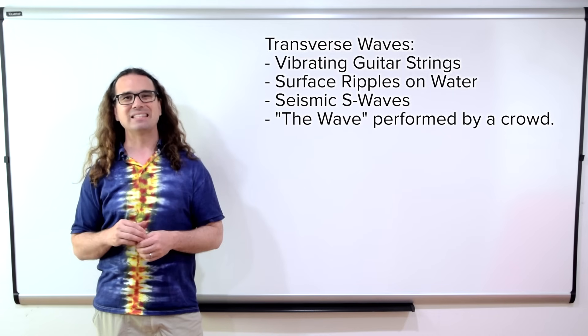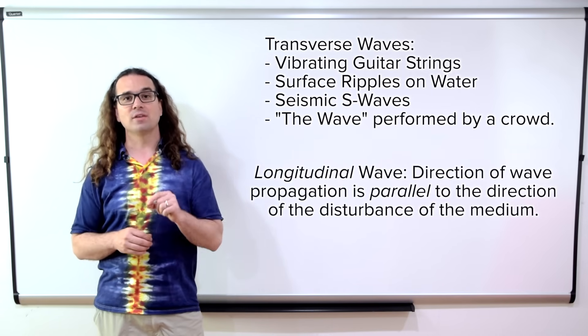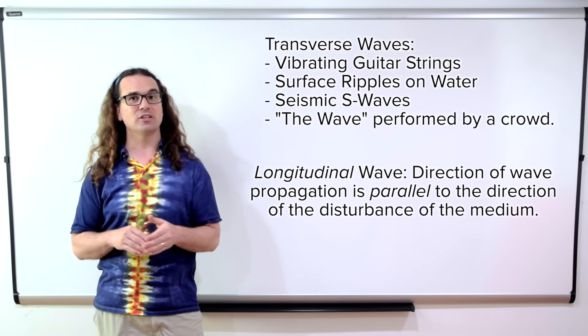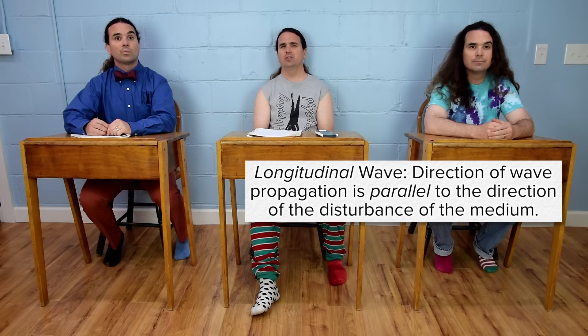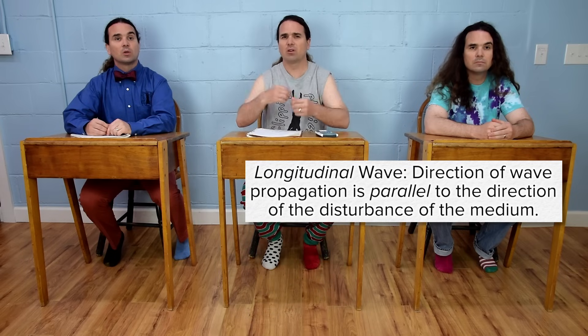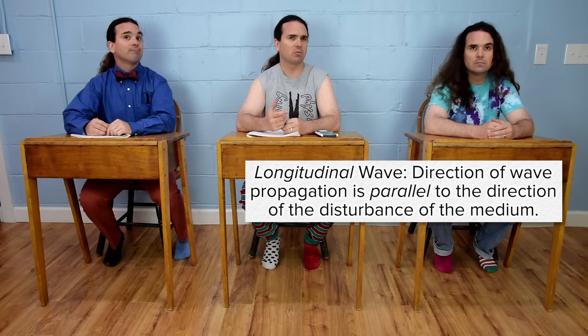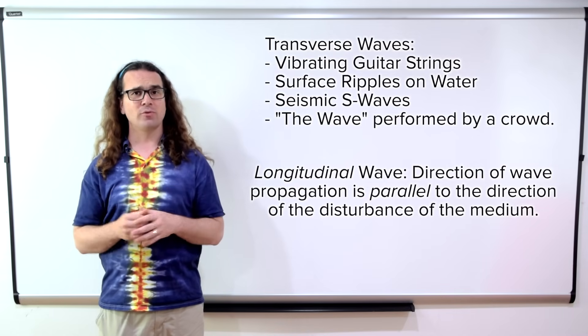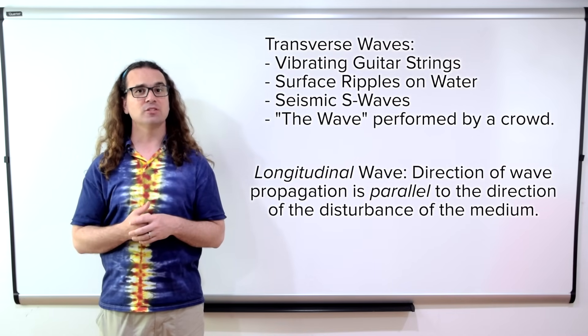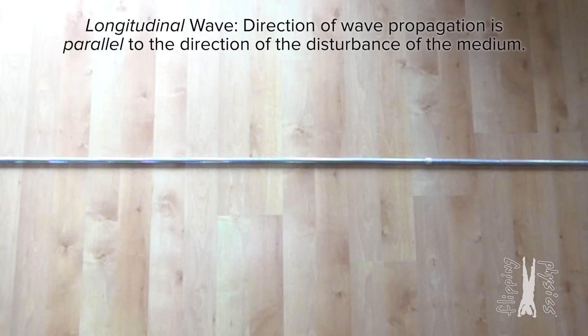Now, the other type of wave is a longitudinal wave. A longitudinal wave is where the direction of wave propagation is parallel to the direction of the disturbance of the medium. You just said the same thing as for a transverse wave, only you replaced perpendicular with parallel, right? Bobby, that is correct. And in order to create a longitudinal wave on this spring, I grab the spring, compress it a bit, and let go. I don't see the longitudinal wave. Where is it?